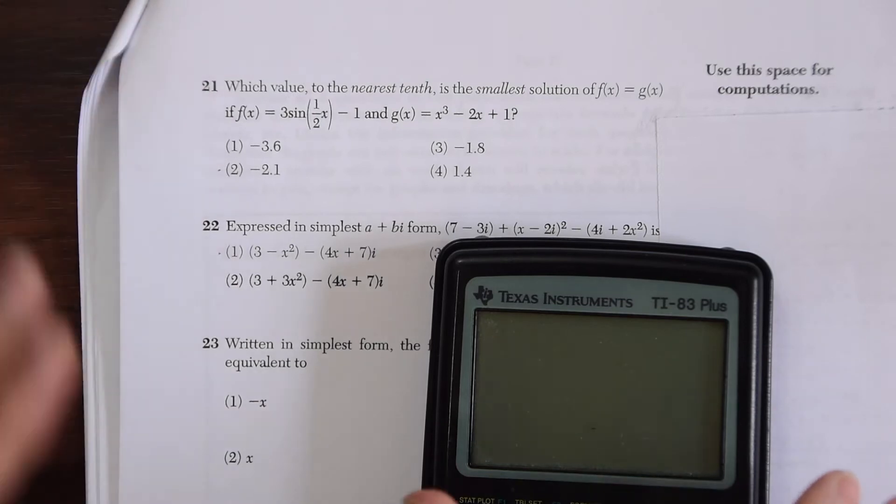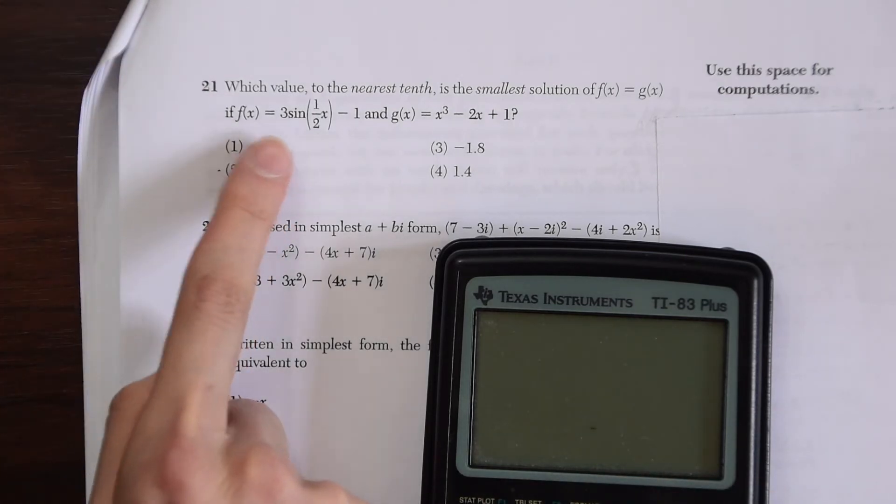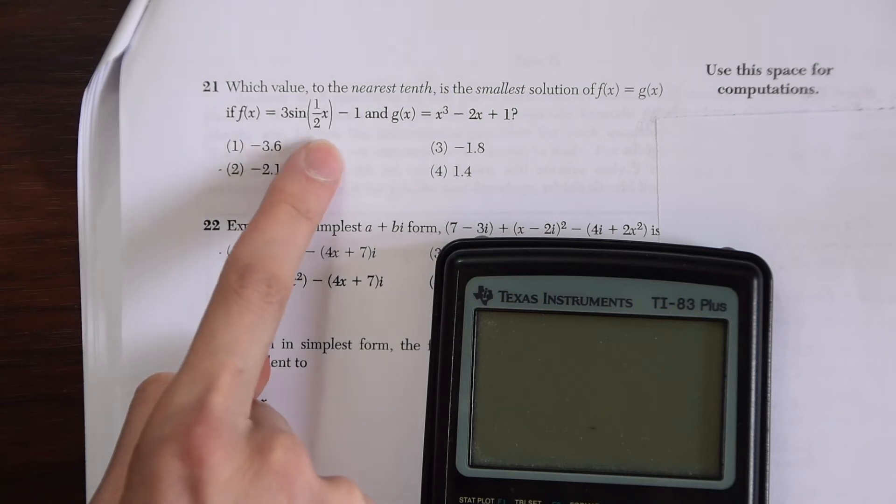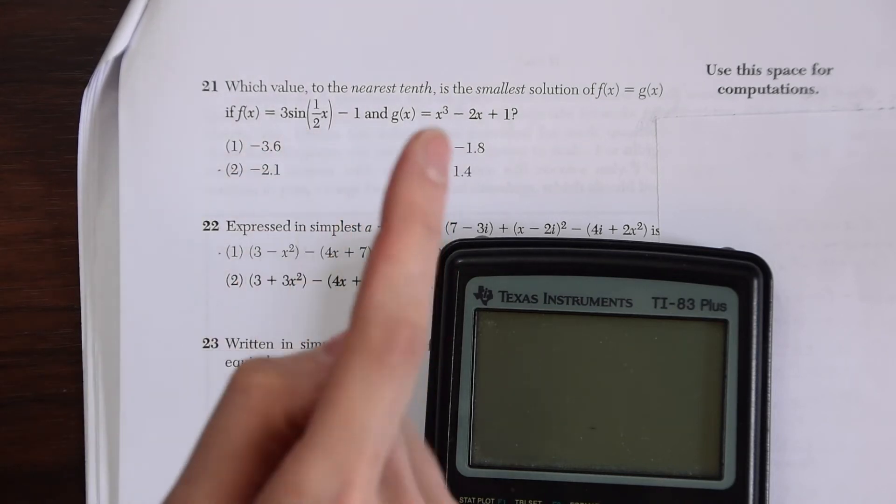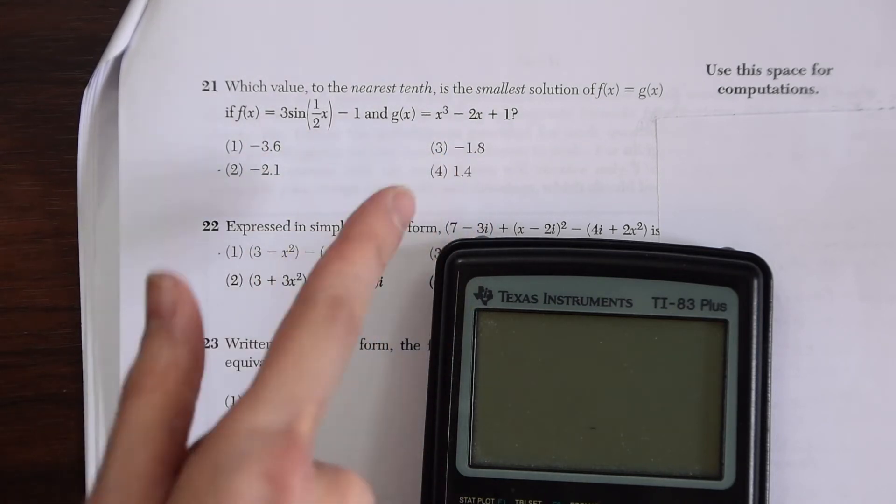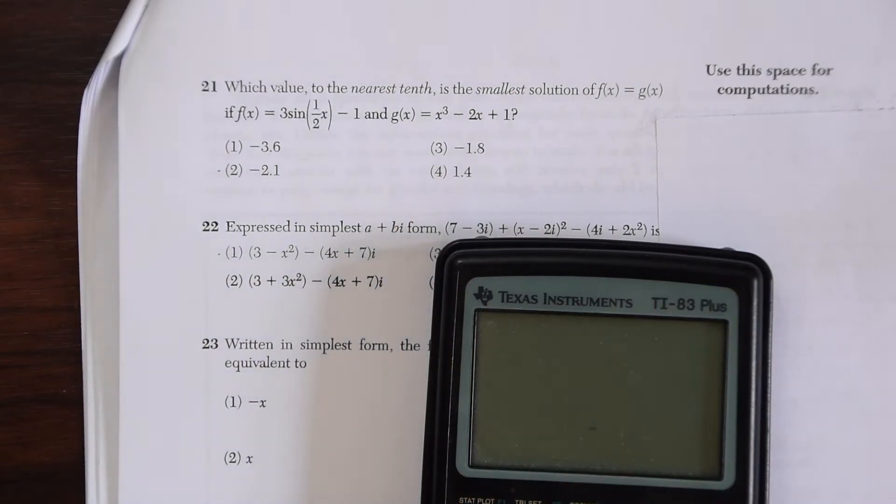Which value to the nearest tenth is the smallest solution of f(x) equals g(x)? We have f(x) equals 3 sine of one half x minus 1, and g(x) equals x cubed minus 2x plus 1. The best way for us to do this is to plug it right into our calculators.